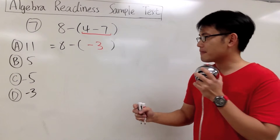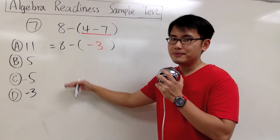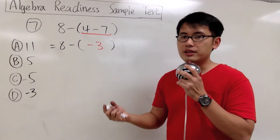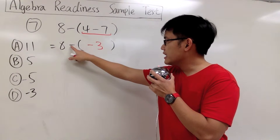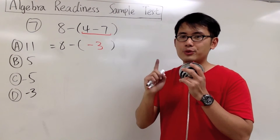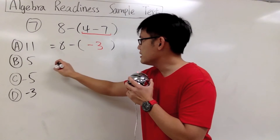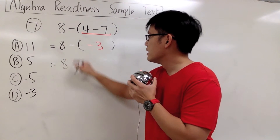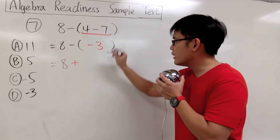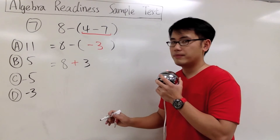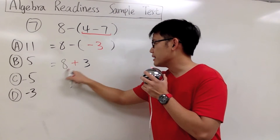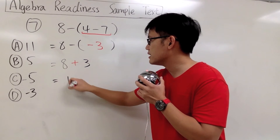And we'll continue from here. Notice that we have parentheses, which indicates multiplication. Here we have negative times negative — it becomes positive. We have to remember that really carefully. So this is going to be 8, negative times negative, that's going to be a plus, and then we will have the number 3. And then we finally work this out: 8 plus 3, that will give us 11.